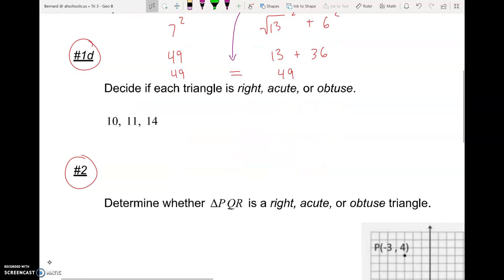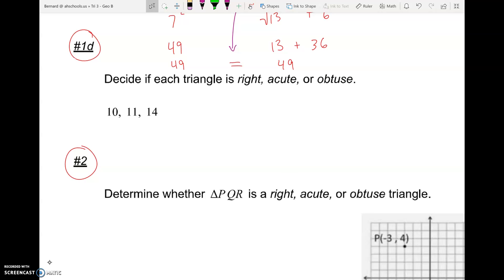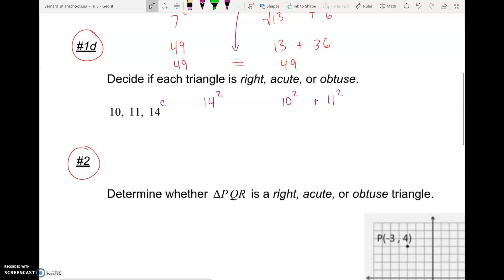So let's do that again, but with another set of numbers. We're moving on to 1D. So here it's a little bit more obvious. 14 is C. 14 is bigger than 11 and 10. Let's do 14 squared. And we'll square and add the other two. 14 squared is 196.